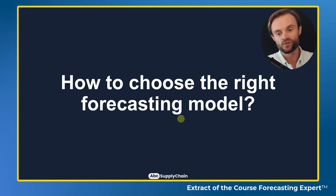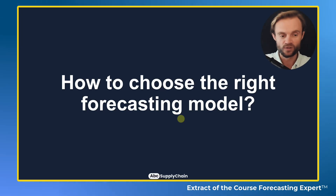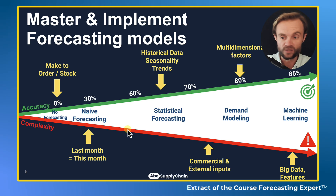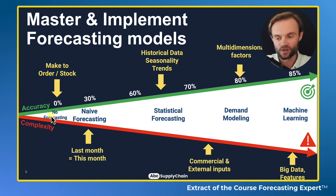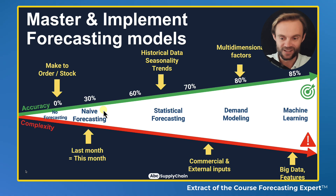All right, so now how to choose the right forecasting model. I was mentioning the level of maturity, different methods, and at the end, you know what, it's very simple. You're going to start where you are today. So if you have no forecasting, you're going to start with naive. If you have a naive, you're going to start by improving your naive, then moving to statistical.